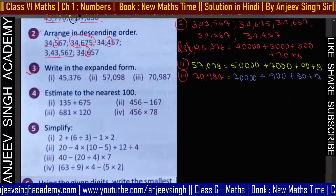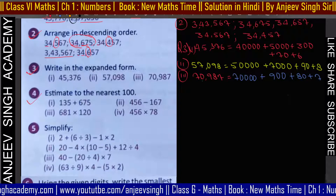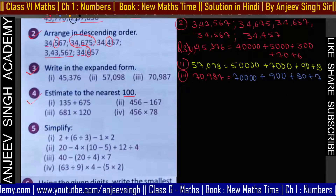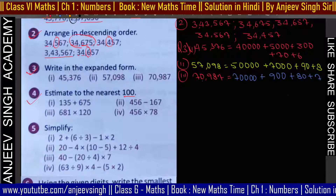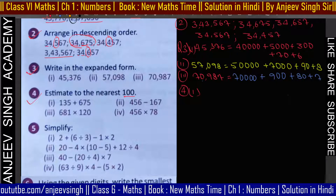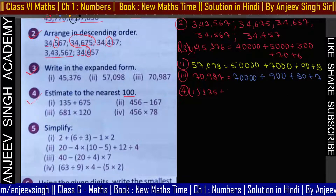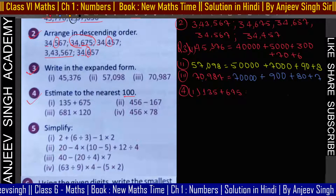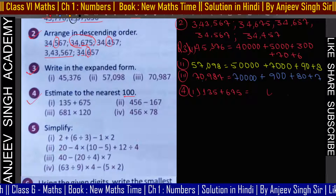Question number 4: estimate to the nearest hundred। Nearest hundred पर estimate करना है। पहले हम add या subtract जो भी कहा गया है वो करेंगे। तो इनको add करते हैं।